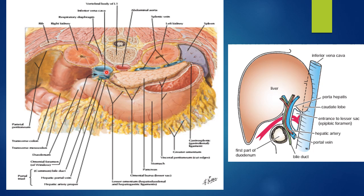We can see the inferior vena cava in the posterior boundary, the portal triad — portal vein, bile duct, and hepatic artery — in the anterior boundary. These are very important structures. In case of surgery such as reduction of an internal hernia in the lesser sac, one should avoid injury to the inferior vena cava in the posterior boundary, or to the portal vein, hepatic artery, or bile duct in the anterior boundary. In summary: inferior vena cava in the posterior wall, the portal triad in the anterior wall, quadrate lobe and process superiorly, and first part of duodenum inferiorly bound the epiploic foramen.